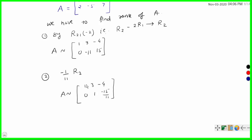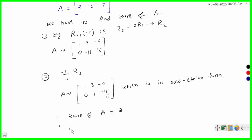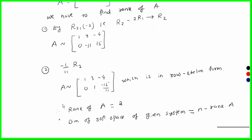This matrix is now in row echelon form. How many non-zero rows are there? Row 1 and row 2 — so rank of A is equal to 2. Therefore, dimension of the solution space of the given system equals n minus rank of A = 3 minus 2 = 1.